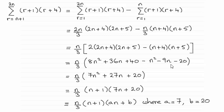And when you group these terms up you get 7n² + 27n + 20, and that factorizes to (n+1)(7n+20). So when you compare 7n+20 with an+b, clearly a is 7 and b is 20. All right.